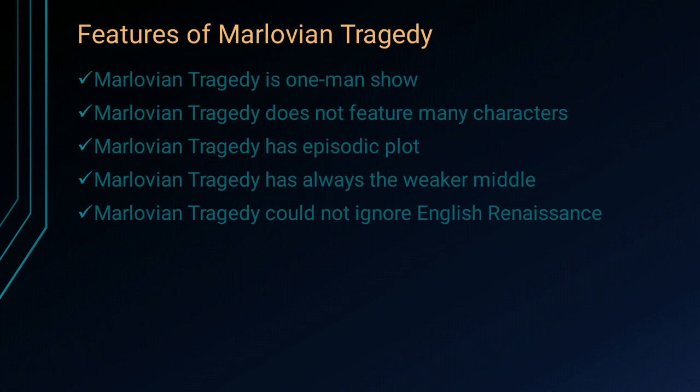The second important feature of Marlowian tragedy is that it does not feature many characters. When you read any Shakespearean tragedy, you get some 30 or 40 characters. But in Marlowe's tragedy, for example in Dr. Faustus, you get hardly 9 to 10 characters, and among those, there is only one important character. Similarly, in Edward II, there are only three important characters: Edward II, Gaveston, and younger Mortimer. Women characters are almost absent — we have only Queen Isabella as a major woman character.